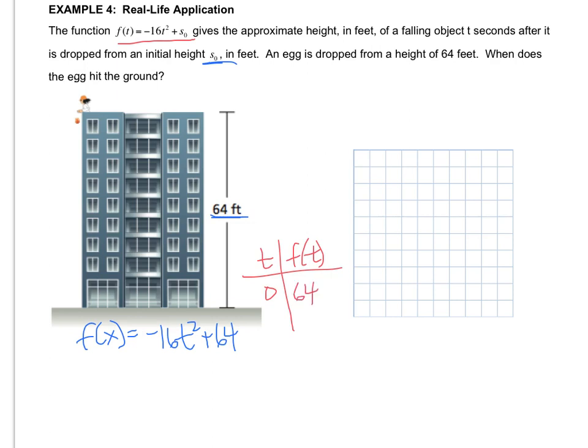Then I plug in 1. And that's negative 16 times 1 plus 64, which is 48. And I plug in 2. That's negative 16 times 4 because I have to do 2 squared. Negative 16 times 4 plus 64. And that gives me 0 when you plug it in.